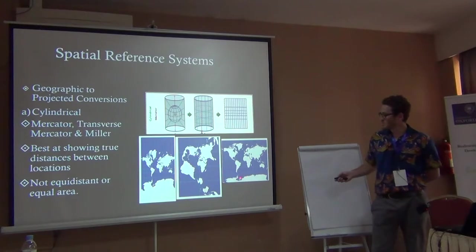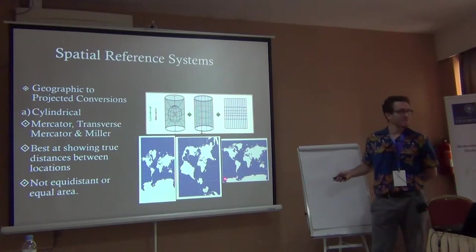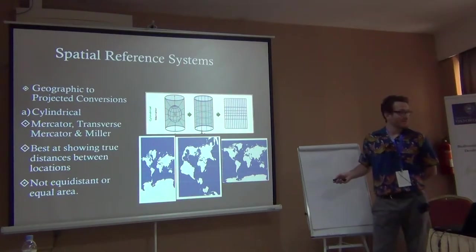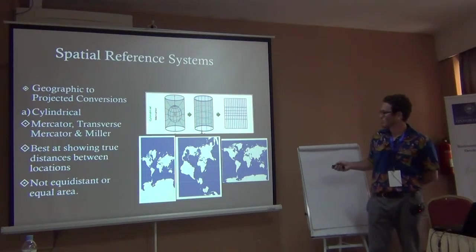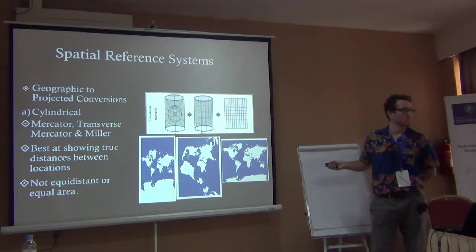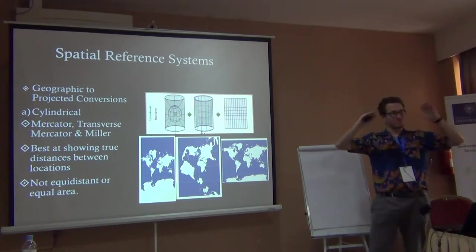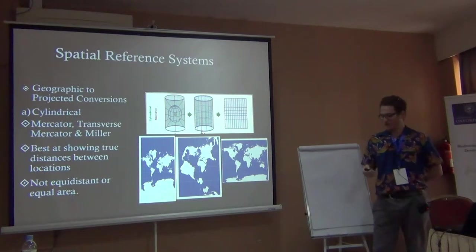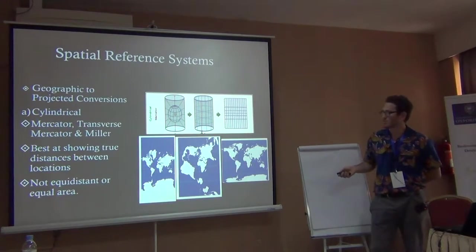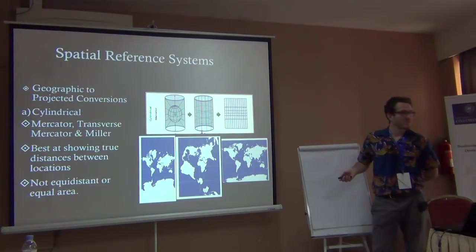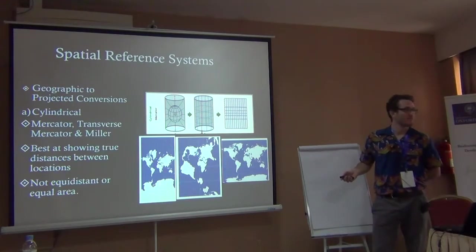What jumps out most is that Antarctica is massive — it looks like the largest continent, spanning the entire map and appearing much bigger than it actually is. The Mercator projection does that at the poles because it's unwrapping and stretching them to fit on a flat surface. Since not many people are studying Antarctica, it usually ends up being the most distorted area in these projections.